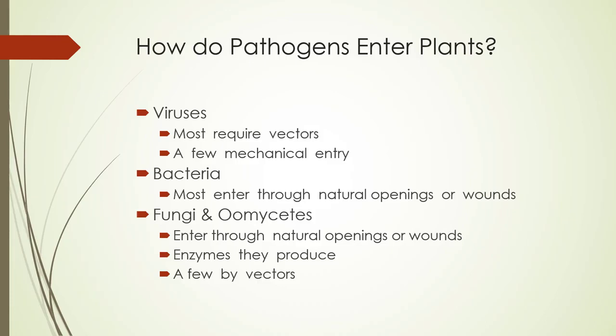How do pathogens enter plants? Viruses require vectors of some sort, and you can be a vector yourself. A few enter by mechanical entry, such as pruning. Sometimes root grafts occur that can spread viruses from one plant to another. Bacteria must enter through a natural opening or wound, and there's usually water associated with that. Fungi and oomycetes, which are water molds, enter through a natural opening or wound, or through the enzymes they produce, with a few by vectors.